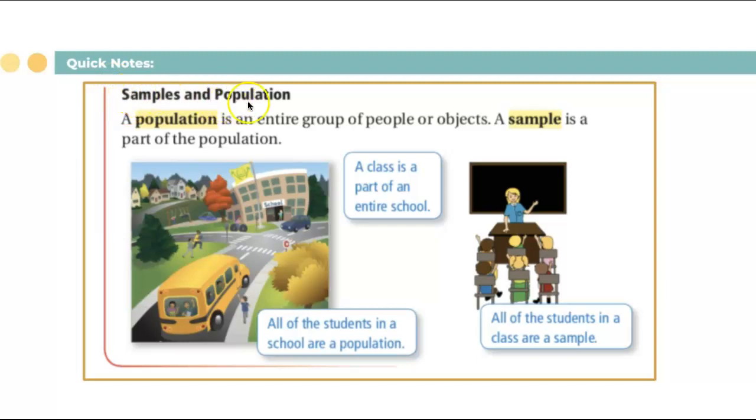For example, some quick notes for this: samples and populations. A population is an entire group of people or objects, and a sample is a part of the population. A class is part of the entire school, so all of the students in school are the population and the sample could be all students in a class. For example, in our school we have sixth, seventh, eighth graders. If you randomly pick students from every grade level, that could be a sample. The entire school population is the population.